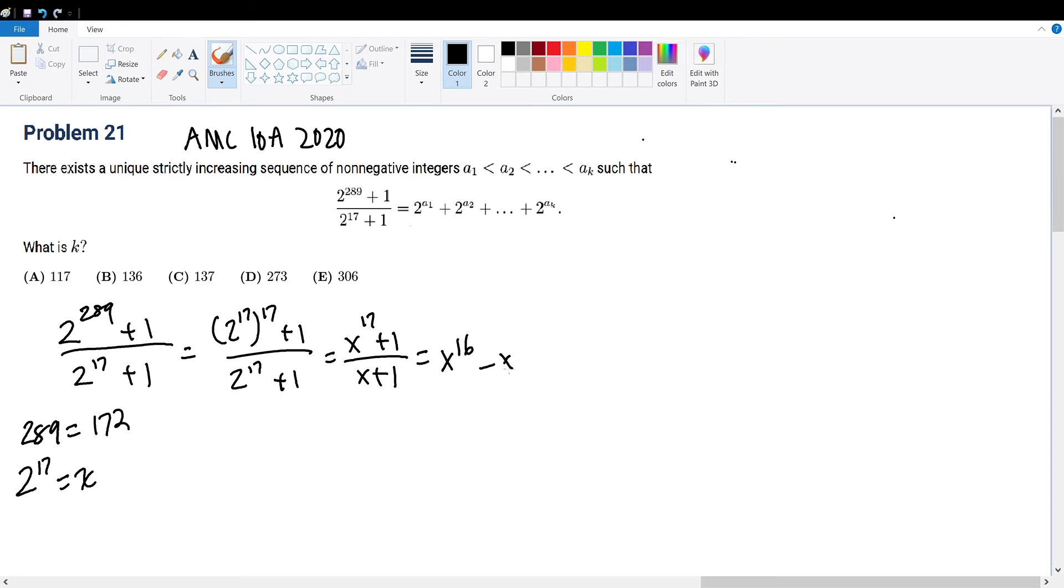This will be equal to x to the 16th minus x to the 15th plus x to the 14th minus x to the 13th. Add this all the way down to x squared minus x plus 1. 1 is x to the 0 power. And think about why this works. When we multiply this quantity by x plus 1, we must get x to the 17th plus 1.